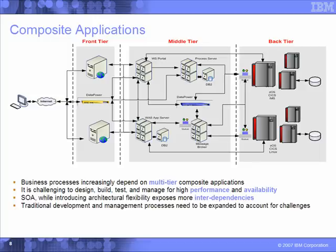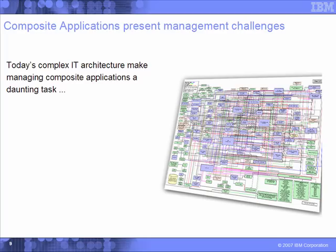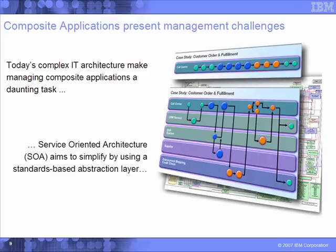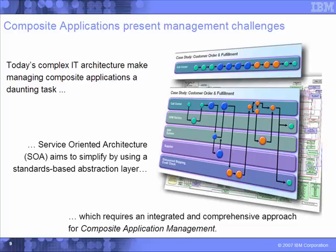So how do we begin to manage something like this? As we see on the graph beside, this is an actual composite application of a customer of ours. It's very complicated — look at the many different resources that comprise this one application. Managing this would be a daunting task if done manually. We also have SOA-based initiatives, services-oriented architecture, which we aim to simplify by adding an abstraction layer, but this causes the composite applications to be even more complex. So we realize we require an integrated, comprehensive approach to managing these applications.